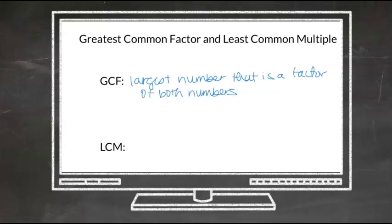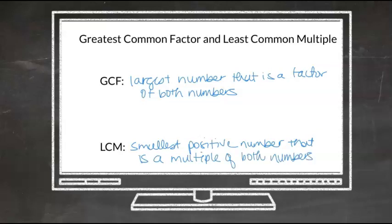What is the definition of the Least Common Multiple? It is the smallest positive number that is a multiple of both numbers. So how do we find them?